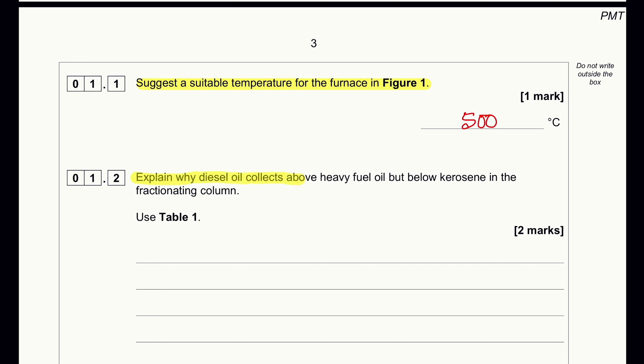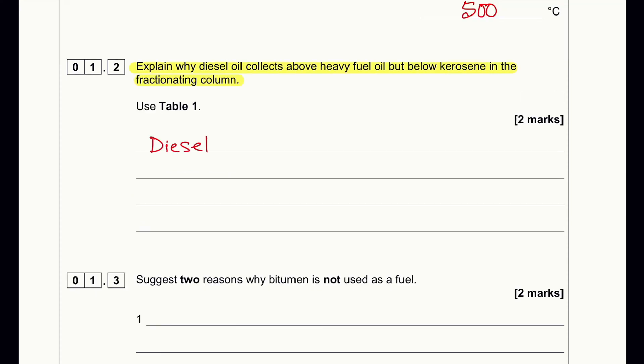Explain why diesel oil collects above heavy fuel oil but only below kerosene in the fractionating column. Diesel oil has lower boiling point than heavy fuel oil but diesel oil has a higher boiling point than kerosene. That's why it is collected in between heavy fuel oil and kerosene.